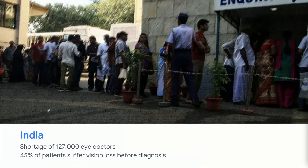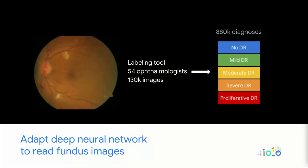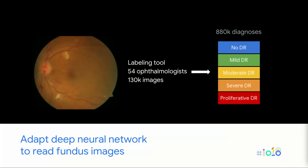Unfortunately, in many parts of the world there are just not enough eye doctors to do this task. With one of our partners in India, there's a shortage of 127,000 eye doctors in the nation. As a result, about 45% of patients suffer some form of vision loss before the disease is detected — and this disease is completely preventable. So we partnered with a couple of hospitals in India as well as a screening provider in the US, and we got about 130,000 images. We hired 54 ophthalmologists and built a labeling tool, and the ophthalmologists graded these images on the scale from no DR to proliferative.